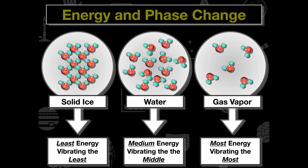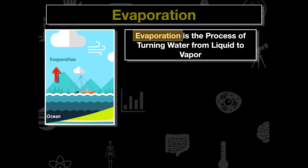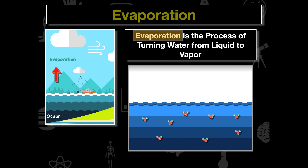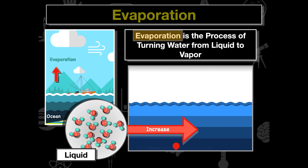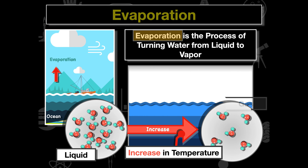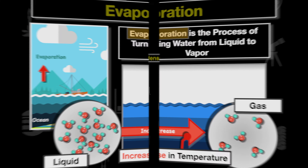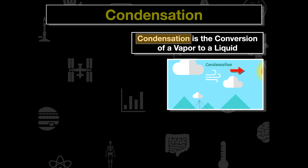Now let's look at evaporation. Evaporation is the process of turning water from a liquid to a vapor. Water molecules flowing in that liquid solution gain energy, vibrate more, and transform into a gas vapor. The molecules spread out more and exist as a vapor. Evaporation takes water from rivers, lakes, or oceans and moves it into the atmosphere, forming clouds, which is important for recycling water and keeping the water cycle moving.